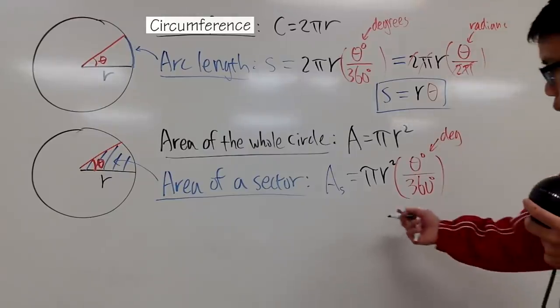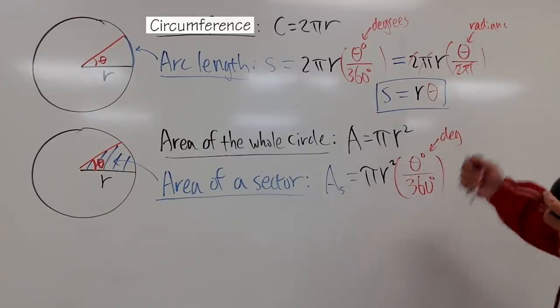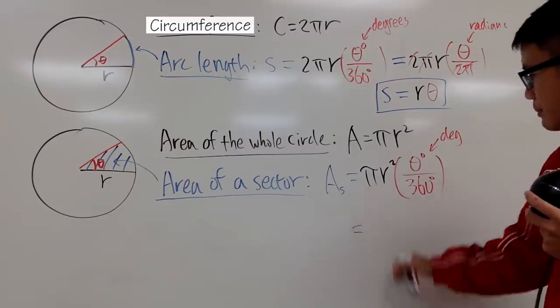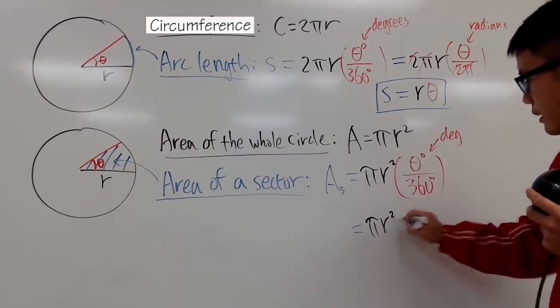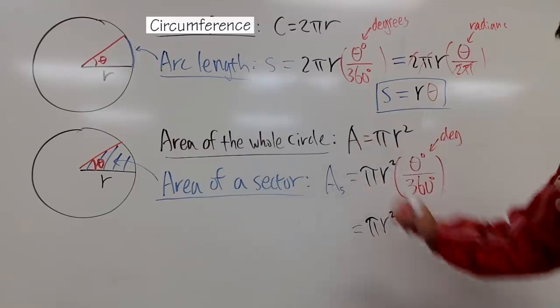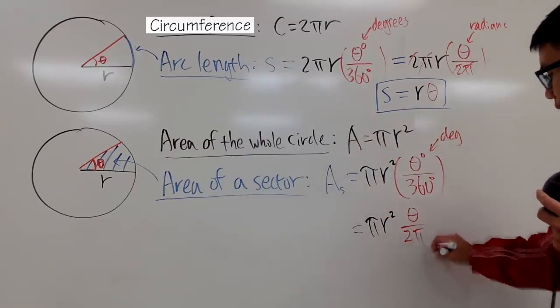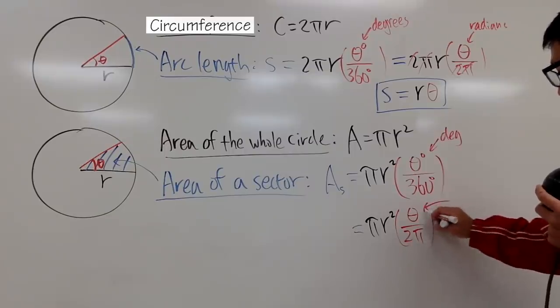And then, if you want to use radians, which if you are an adult, then you do the following. You can just put down πr². And, for the θ, you just put down radians, divided by, for the 360, you put down 2π, like that. And this is for radians.